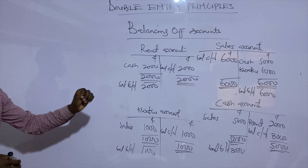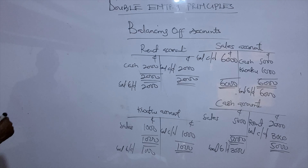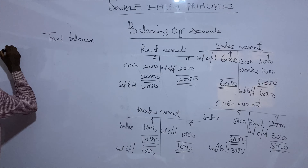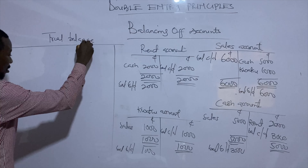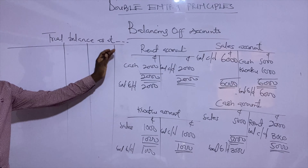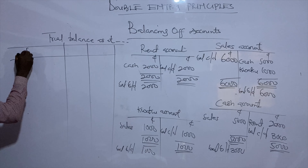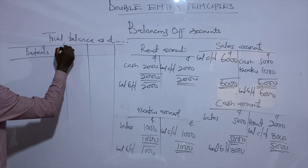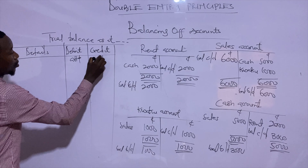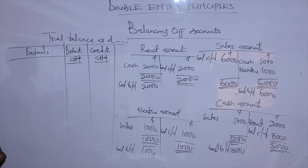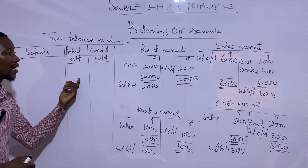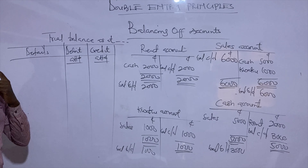Based on this definition, we can now prepare a trial balance. A trial balance is a statement prepared as at the year end or as at the end of the month. It has a details column, a debit column, and a credit column with the currency sign. The preparation of a trial balance is very simple — it is simply a matter of picking the debit balance of an account and placing it on the debit side, and the credit balance of an account and placing it on the credit side.